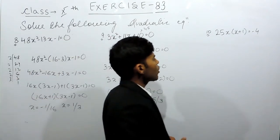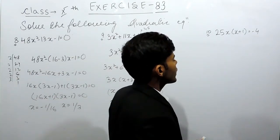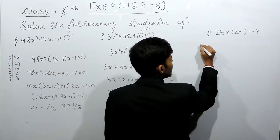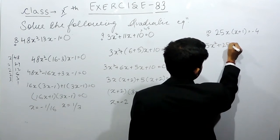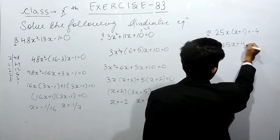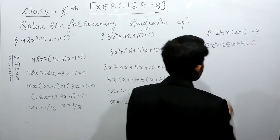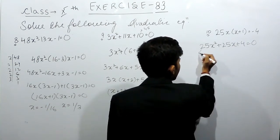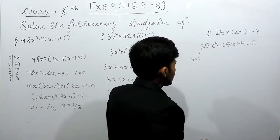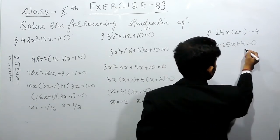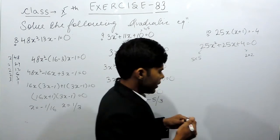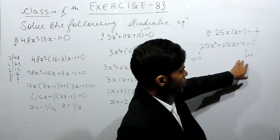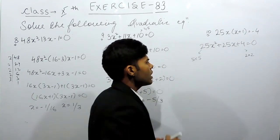And in the tenth question, first of all we will convert this in quadratic form. So this will be 25x² + 25x + 4 = 0. Now the prime factorization of 25 will be 5 into 5 and this will be 2 into 2. We have to make this 25 so we can write this like 5 into 4 is 20 and 20 + 5 is 25.